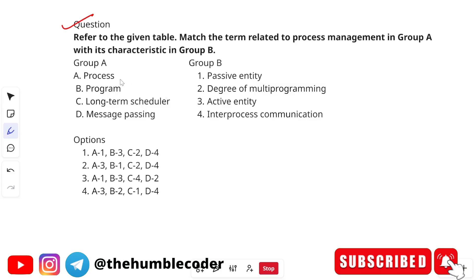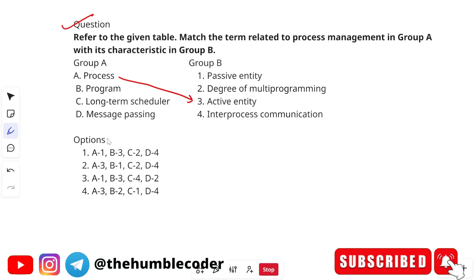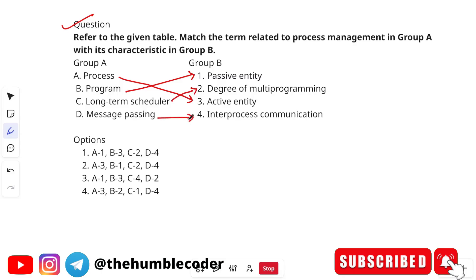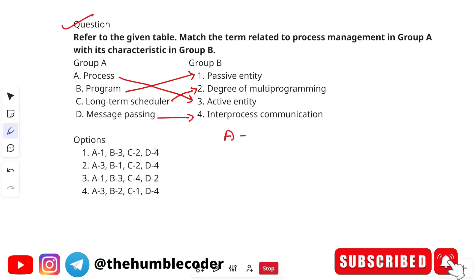Process maps to 'active entity' because a process is a program in execution, making it active. Program maps to 'passive entity' because a program stored on disk is passive until executed. Long-term scheduler maps to 'degree of multi-programming' since it decides how many processes are admitted into the system. Message passing maps to 'inter-process communication' as it is used by processes to communicate with each other. The mapping is A→3, B→1, C→2, D→4. The correct answer is option 2.